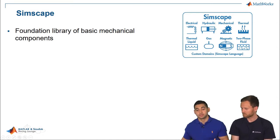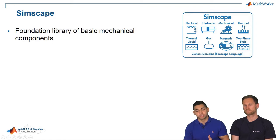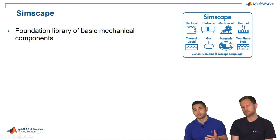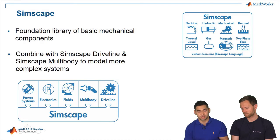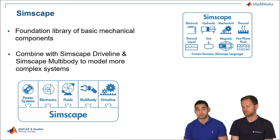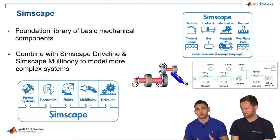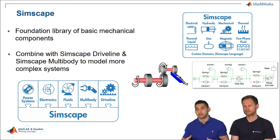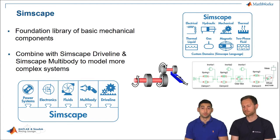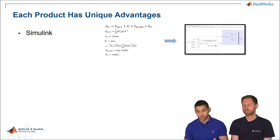Simscape is broken down as follows: the Simscape Foundation Library provides very basic blocks for domains including electrical, hydraulic, mechanical, thermal, gas, magnetic, and fluids. For more specialized applications, there are add-ons such as Simscape Power Electronics, Simscape Electronics, Simscape Fluids, Simscape Multibody, and Simscape Driveline. A nice workflow is to start with the foundation library and then add specialized add-ons like Simscape Multibody or Simscape Driveline for automotive applications.